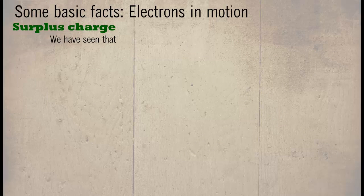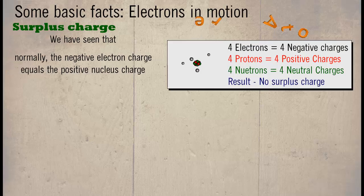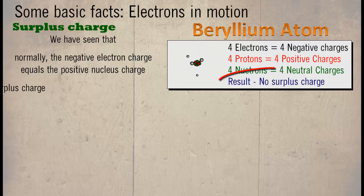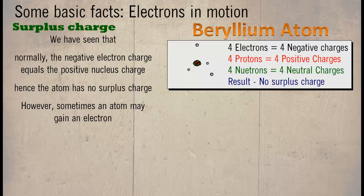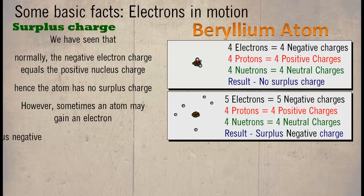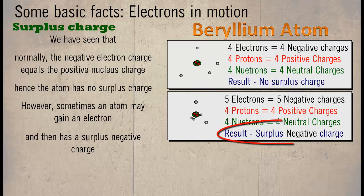We've seen that normally the negative electron charge equals the positive nucleus charge, so the atom has no surplus charge. However, sometimes an atom may gain an electron, and then has a surplus negative charge.